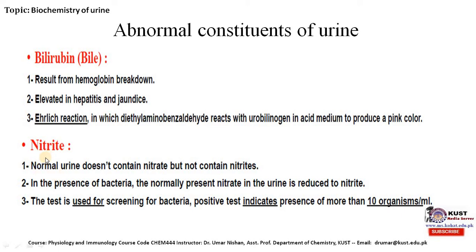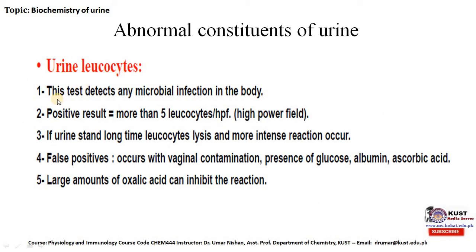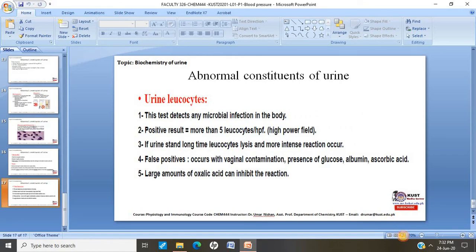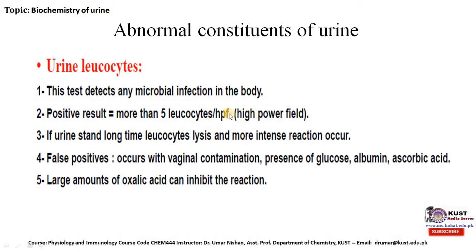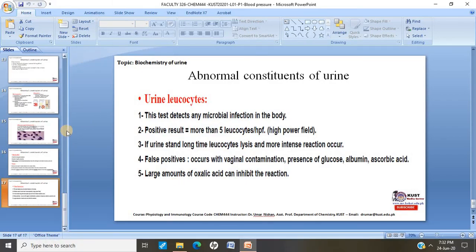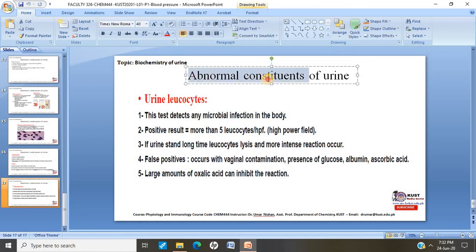Regarding nitrite as an abnormal constituent: normal urine does not contain nitrite, but in the presence of bacteria, the normally present nitrate in urine is reduced to nitrite. The test is used for screening of bacteria, and a positive test indicates the presence of more than 10 organisms per ml. Another situation is urine leukocytes: this test detects any microbial infection in the body. A positive result is more than 5 leukocytes per high power field. False positives can occur with vaginal contamination, presence of glucose, albumin, or ascorbic acid, and large amounts of oxalic acid can inhibit the reaction.